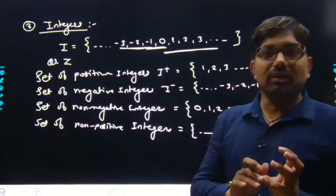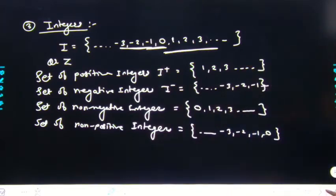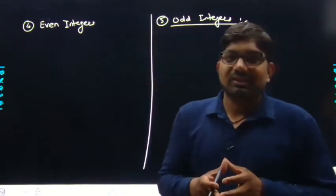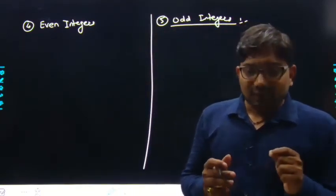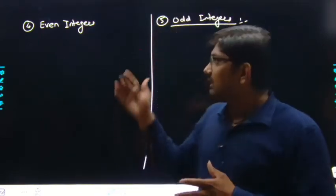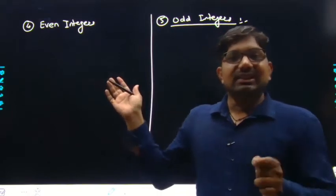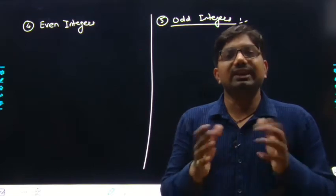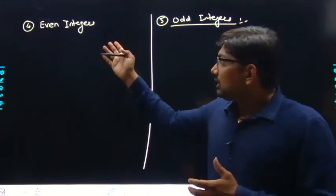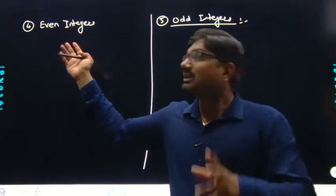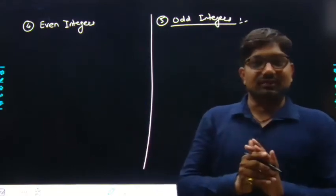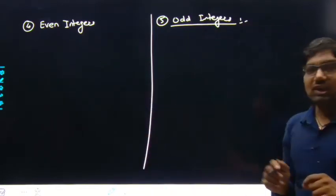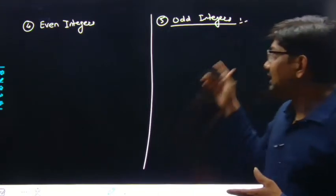So, this is all about natural numbers, whole numbers, and integers। अब देखते हैं even और odd integers। Even और odd differentiate करने के लिए two की divisibility test use करते हैं। अगर कोई भी integer 2 से completely divide हो जाता है, तो उसे even integer बोलेंगे। अगर कोई number 2 से completely divide नहीं होता, तो उसे odd integer बोलेंगे।